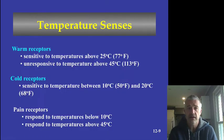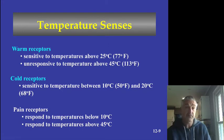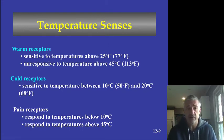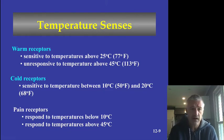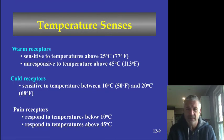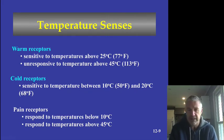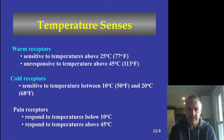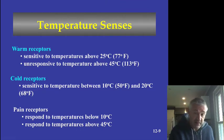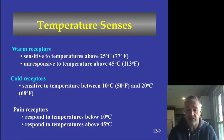The skin also has temperature receptors, which are different from pressure and touch receptors. Warm receptors are sensitive roughly in the range of the 70s to just over 100°F. Cool receptors are active between about 10°C and 20°C. Outside those ranges, you begin activating pain receptors — below 10°C or above 45°C, pain receptors start firing.